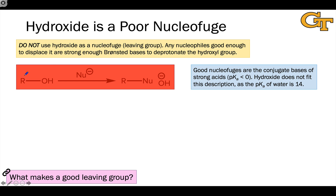We made the point in introducing the chemistry of alcohols that the carbon connected to the hydroxyl group has the potential to act as an electrophile. That may lead you to believe that it's possible for a nucleophile to directly displace hydroxide in an SN2 step that looks something like this, with a lone pair of electrons in the nucleophile headed to the carbon connected to the hydroxyl group, with the C-O bond breaking towards oxygen. This would give rise to a new carbon-nucleophile bond and hydroxide.